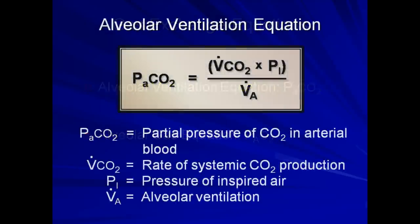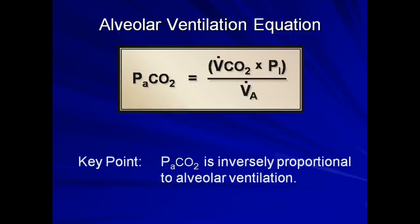Here is the alveolar ventilation equation. It states that arterial CO2 tension is equal to the rate of systemic CO2 production times the pressure of inspired air divided by alveolar ventilation. If you recall from lecture 2, alveolar ventilation is equal to tidal volume minus dead space times the respiratory rate. The key point is that PaCO2 is inversely proportional to alveolar ventilation — the faster and/or deeper that a patient breathes, the lower the PaCO2 will be. Related to that, the greater the amount of dead space, the higher the PaCO2.